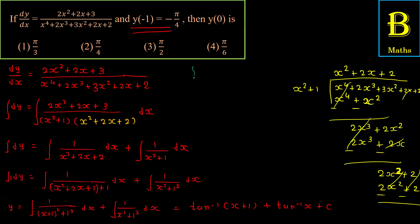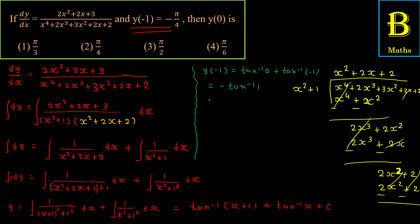Verification: y की जगह y(-1) = -π/4 put करते हैं, x = -1 रखेंगे। tan⁻¹(-1 + 1) + tan⁻¹(-1) = tan⁻¹(0) + (-tan⁻¹(1)) = 0 + (-π/4) = -π/4। यह prove हो गया — condition satisfy होती है।